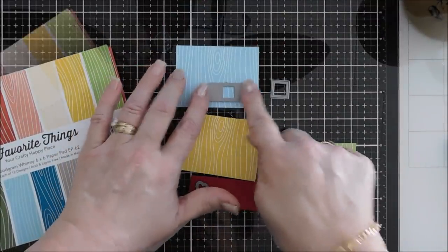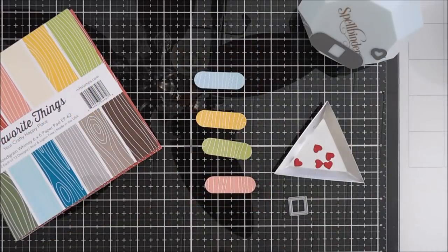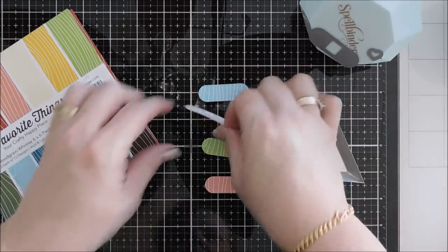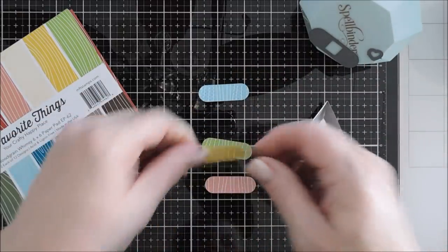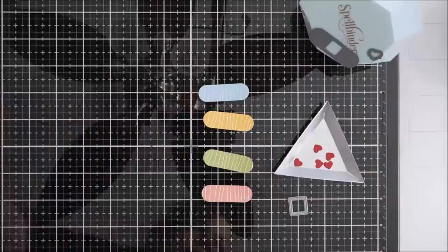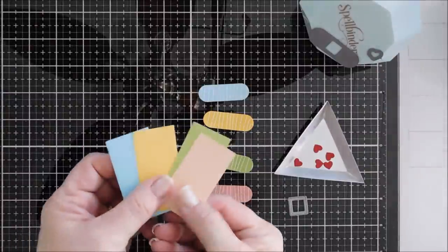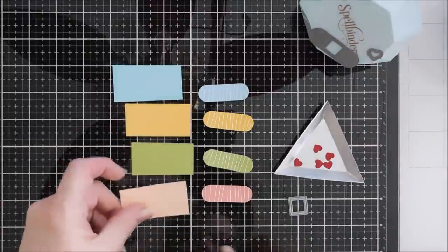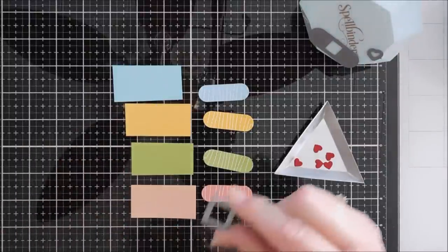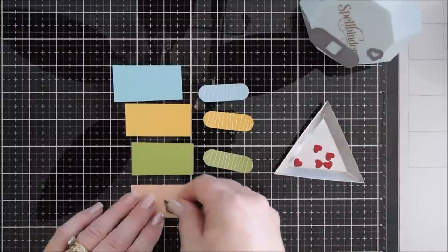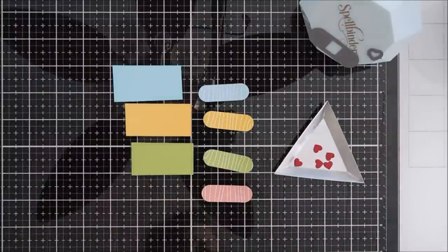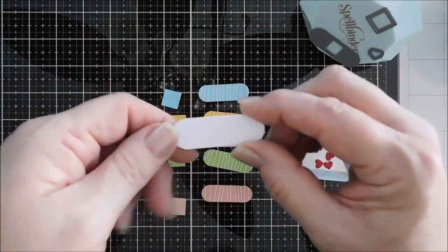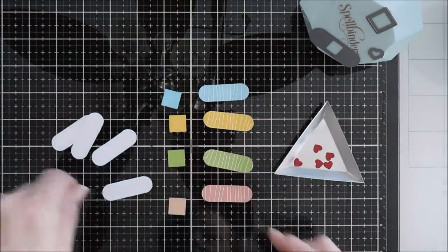And once we're done die cutting our band-aid out, you can see here it kind of takes away from the woodgrain and turns that woodgrain pattern into like wonky lines. I'm going to take the little square die and we're going to die cut out the center. But I went through my scrap stash of cardstock and found some coordinating colors that matched the pattern paper. I thought we'd have some solid print in the middle of our band-aid.